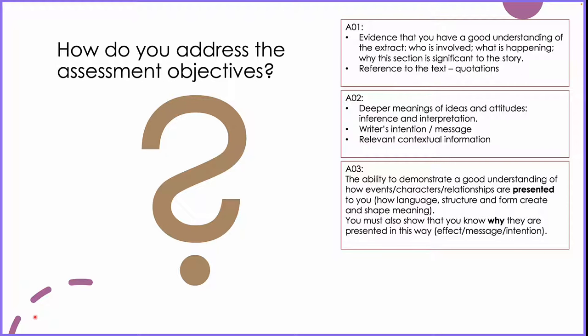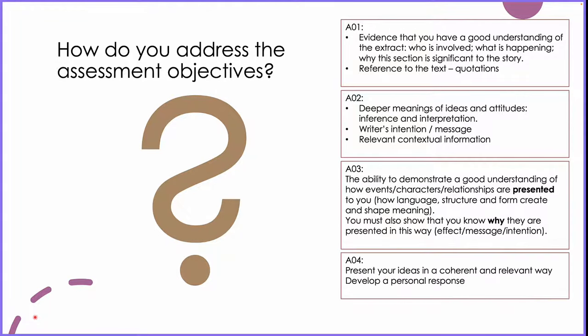And then you must think about why. Why is something presented in the way that it is? Why has the writer presented this character in this way? Why is this word being used? Why is this method being used? And again, that can go all the way back to your AO2 — your writer's intention, your message, and the context.